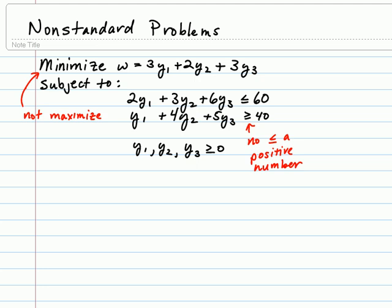So we can see on this particular problem, it does say minimize, and yet it's not a standard minimization problem due to some problems with the constraints. This would need to be a greater than or equal to to be a standard minimization problem. It's not standard maximization because the original objective function we are minimizing, and also because of an inconsistency with the inequality constraints.